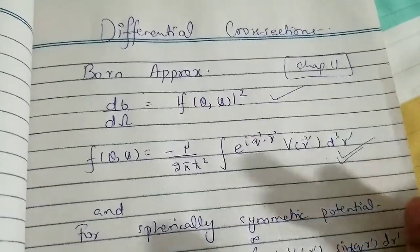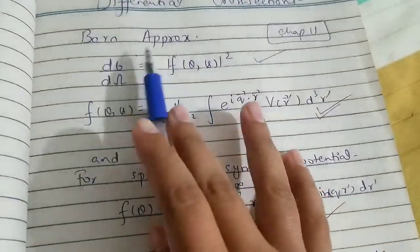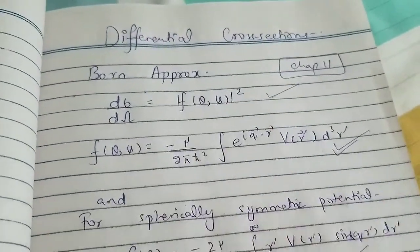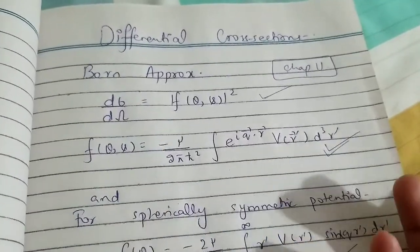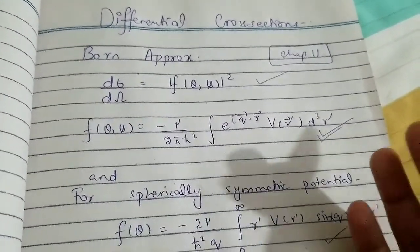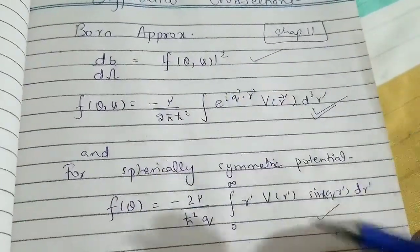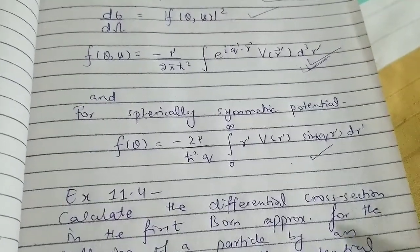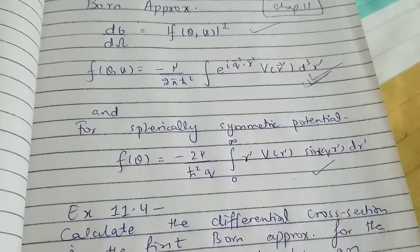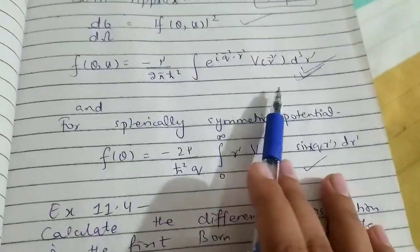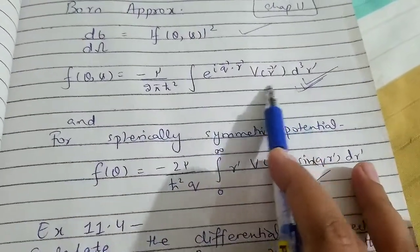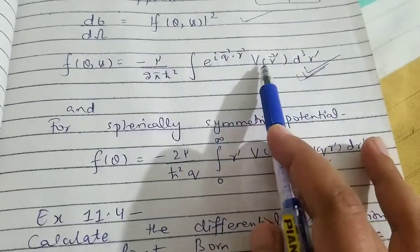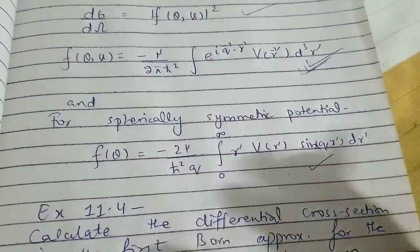Here I first quoted the main formulas in the Born approximation, because when you are talking about differential cross-section using the integral formulas, the applicable and practical formula we can use in solving problems is from the Born first approximation. The problem statement will clearly show whether to use partial wave analysis or Born approximation. I will note these formulas — this formula is the Born first approximation for any general weak potential V of r-vector.